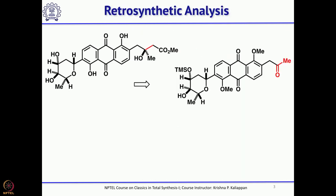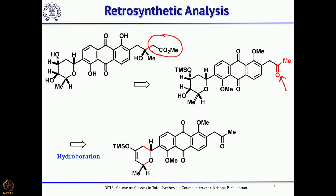Let us look at the retrosynthesis. They made this Viniomycinone methyl ester from this methyl ketone using a Reformatsky type reaction. One can easily see this CH2CO2Me group can be added to this methyl ketone via Reformatsky reaction.